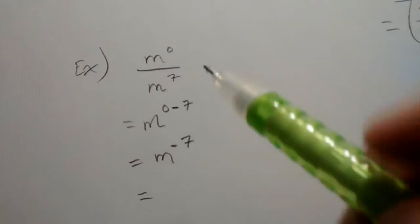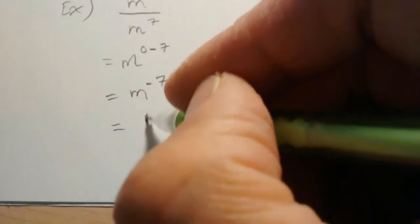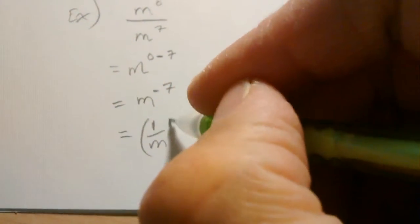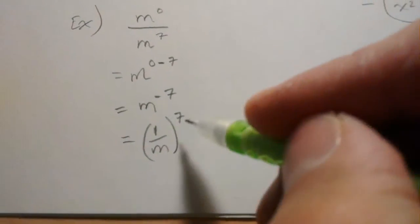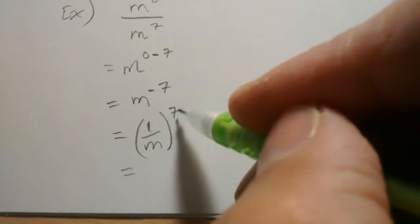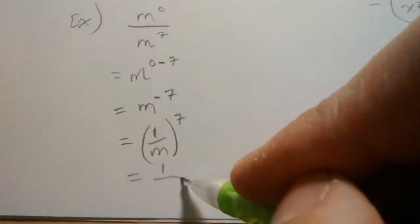And what's happening here is you would take 7 reciprocals of that base and multiply them together. So the reciprocal of m is 1 over m, and then multiplying it 7 times, which would give us 7 ones being multiplied, which is just 1.